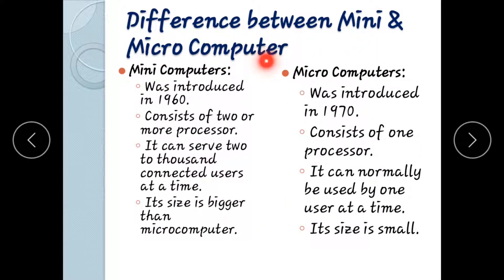The difference between mini and microcomputer can be confusing. Mini computers were introduced in 1960, microcomputers in 1970. Mini computers have processors supporting up to a thousand connected users at a time, while microcomputers are normally used by one user. Microcomputers are smaller in size than mini computers.